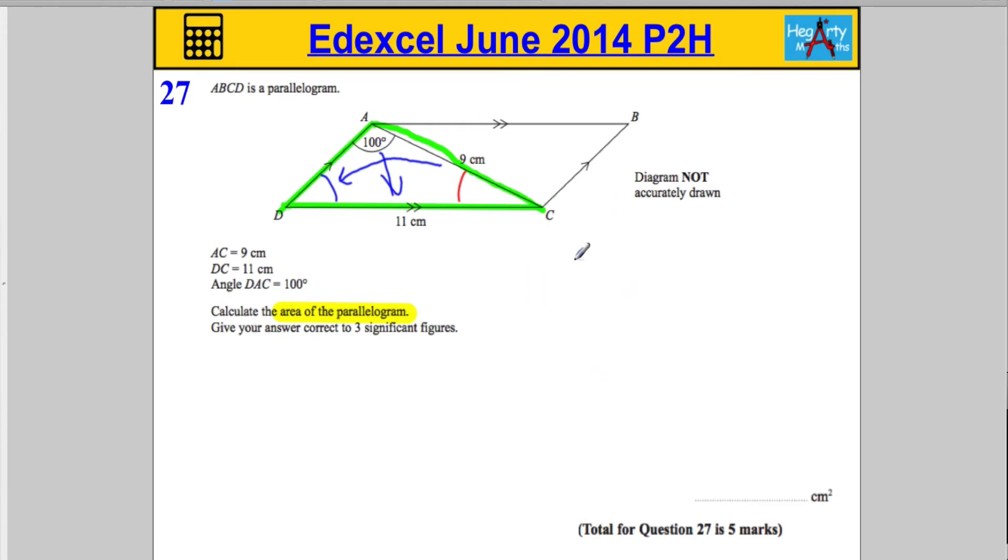So we're going to use a version of the sine rule, which is not on the front of the paper, but you should know about it. I'm going to call this X. Okay, so sine of the angle X divided by its corresponding side, 9,